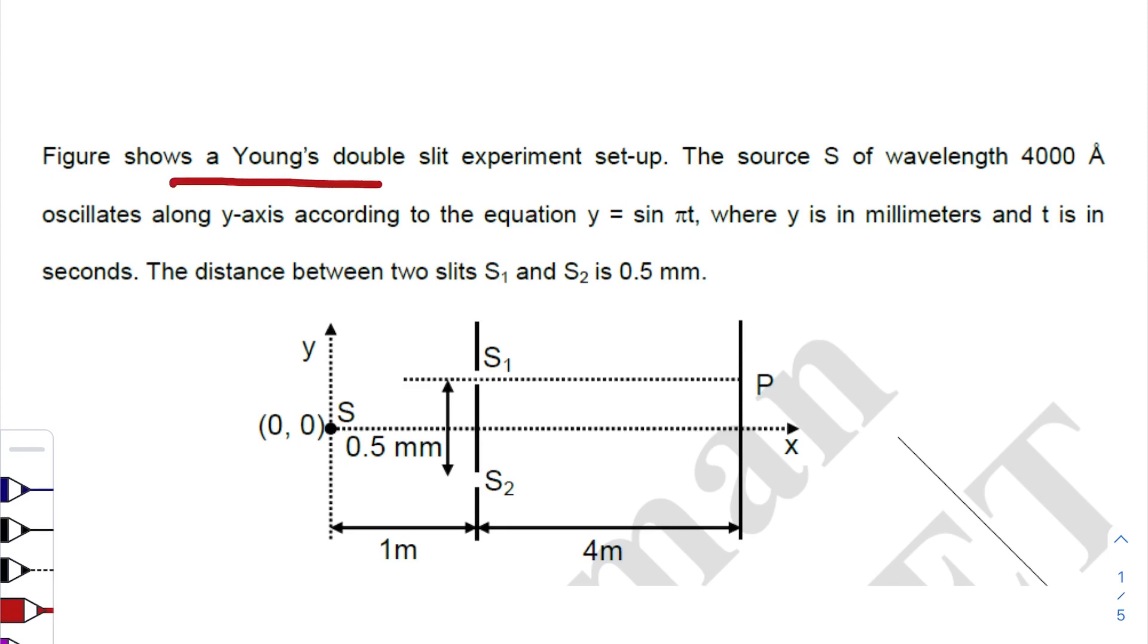Figure shows a Young's double slit experiment setup. The source S of wavelength 4000 angstrom oscillates along y-axis following this equation where y is measured in millimeters, t is in seconds, the distance between the two slits is 0.5 millimeter.